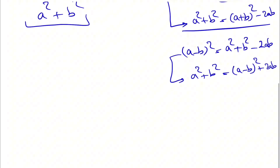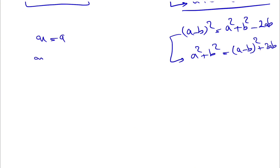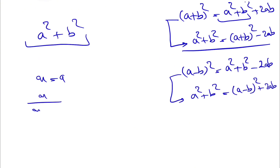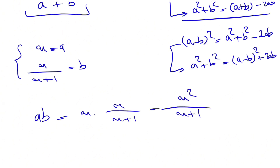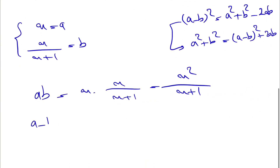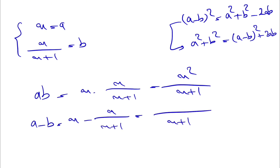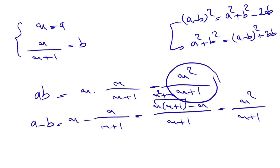Let's call x our a and x/(x+1) our b. Our ab will be x · x/(x+1) = x²/(x+1). And a − b = x − x/(x+1). With a common denominator of x+1, we get [x(x+1) − x]/(x+1) = (x² + x − x)/(x+1) = x²/(x+1). Since a − b gives us the same expression as ab, this seems to be the way to go.